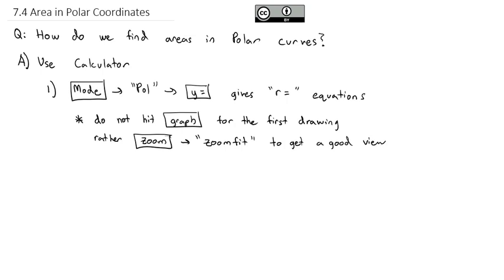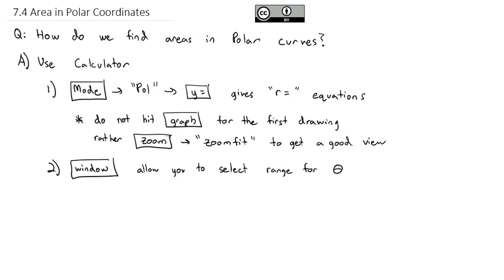Sometimes Zoom Fit skews the graph — maybe the x's count by 2's and the y's by 7's — but it does provide a really good view of what the graph looks like. Also be aware of the window button, because it not only lets you set minimum and maximum values for x and y, it also lets you select a range for theta. We'll use 0 to 2π as the default, and whenever we change it we need to remember to change it back to 0 to 2π, otherwise some weird things might happen.